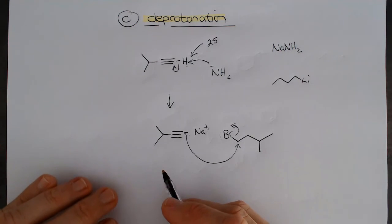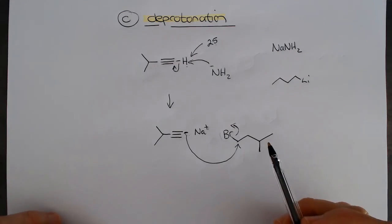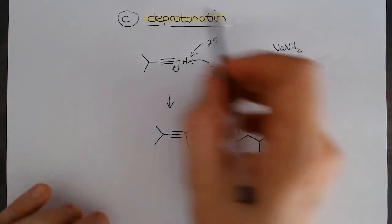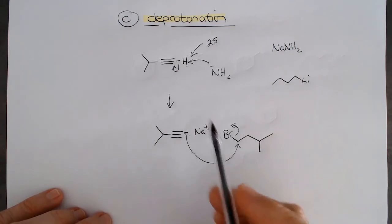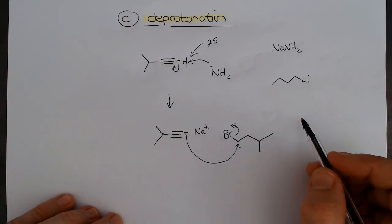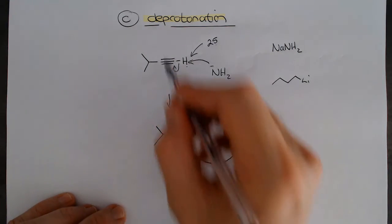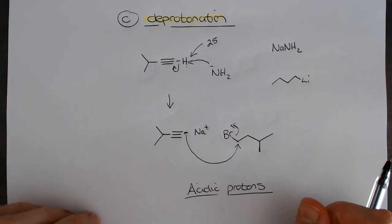So those are the three different methods that we can make organometallic reagents. So we can either do an oxidative insertion, we can either do a metal halogen exchange, or we can deprotonate. And really, the deprotonation is just, we're just looking at alkynes. And that's all we're going to focus on in this course. The big consideration is always acidic protons. We really, really need to make sure, watch out for those acidic protons. They are the bane of any synthesis. We need to watch out that we don't have them present, because it will kill our nucleophiles. They'll no longer be nucleophilic.